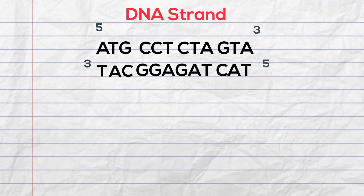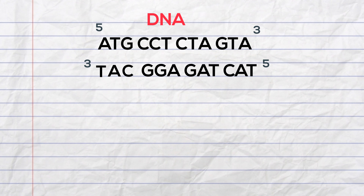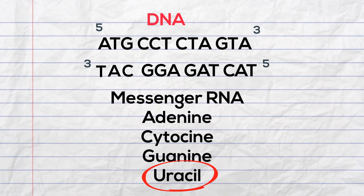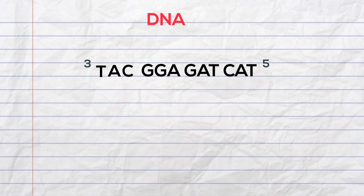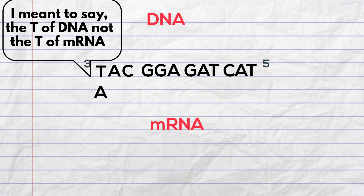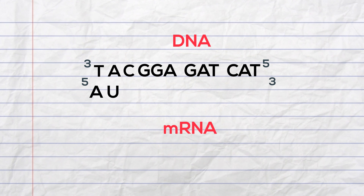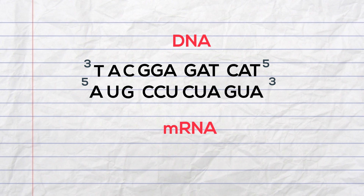Messenger RNA is similar to DNA but instead of thymine you have uracil. The DNA has unzipped during protein synthesis and you are left with this strand. The T of messenger RNA will pair with the A, the A with the U, the C with G, and so forth. I will circle the A pairing with the U just for emphasis.